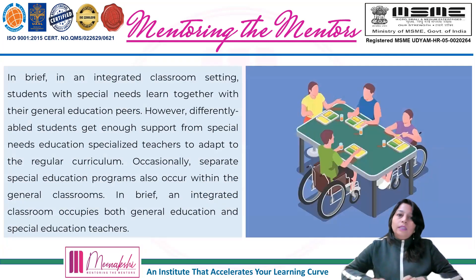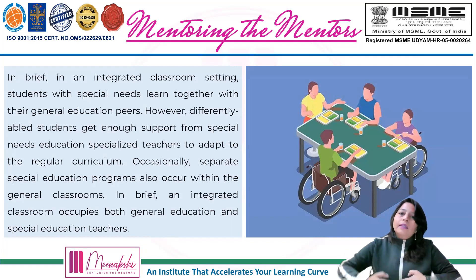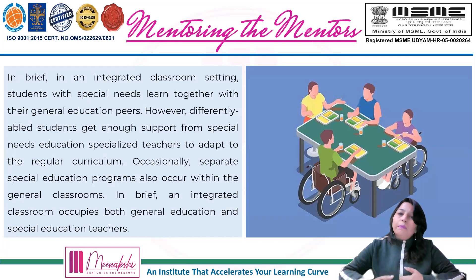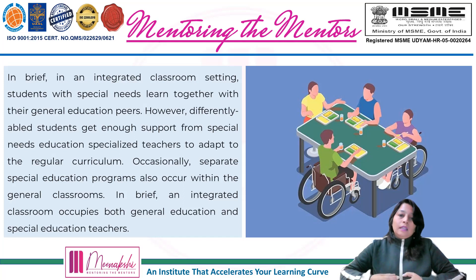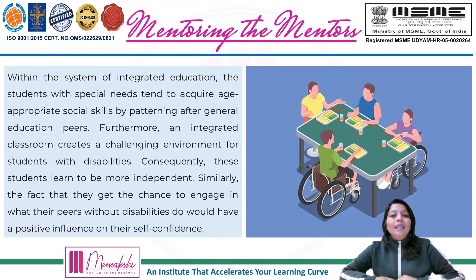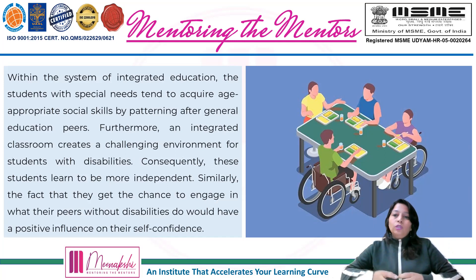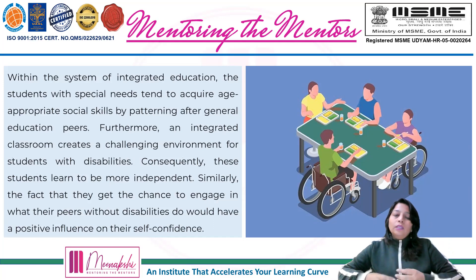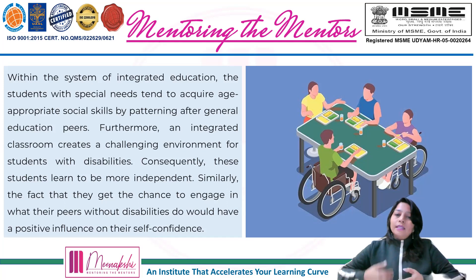Now, let's talk about the integrated classroom. As you can see, in an integrated classroom setting, students with special needs learn together with the general education peers — so it is comparatively better than special education. However, differently abled students get enough support from special needs educators, who are special educators — unko kaafi support diya jata hai. And occasionally, unke liye separate special education programs bhi conduct kiye jaate hain, apart from the general classroom education. Within the system of integrated education, the students with special needs also acquire age-appropriate social skills. Students thode independent ho jaate hain, aur unko dekh kar motivation bhi milta hai — 'I can do this, I can do that' — that influences their self-confidence.